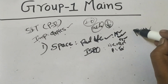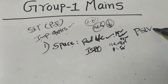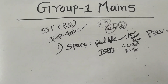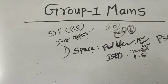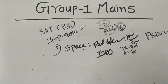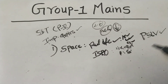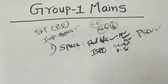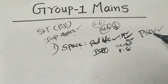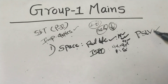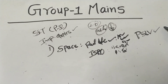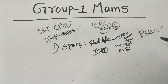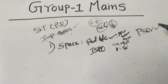PSLV — Polar Satellite Launch Vehicle — is a rocket launching vehicle. We also have to talk about PSLV and GSLV, and their modern versions, as well as ASLV. GSLV and PSLV are modern versions. PSLV has significant significance in India's space program.